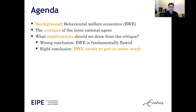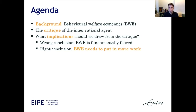Having introduced behavioral welfare economics, I will go over the critique of the irrational agent, and then — the main part of this presentation — I will go over the implications of this critique. The broad point I want to make is that there's a wrong conclusion and a right conclusion to draw from the critique. The wrong conclusion is that behavioral welfare economics is fundamentally flawed; the right conclusion is that behavioral welfare economists need to put in more work to do the type of welfare judgments they're interested in, but the upshot is that this is possible at least sometimes — and that is good news for nudges.